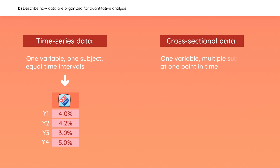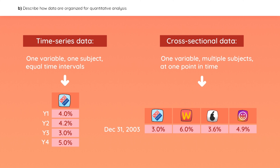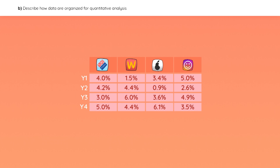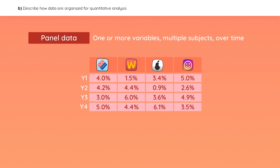Cross-sectional data is when you analyze one variable for multiple subjects at a single point in time — for example, taking the annual returns of four different stocks in year three. If we combine time series and cross-sectional data, we get a table that can be categorized as panel data, which analyzes one or more variables for multiple subjects over time.